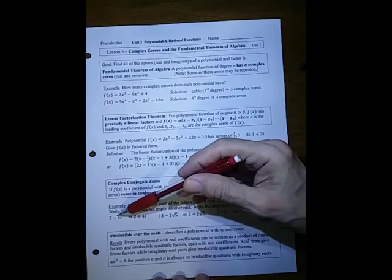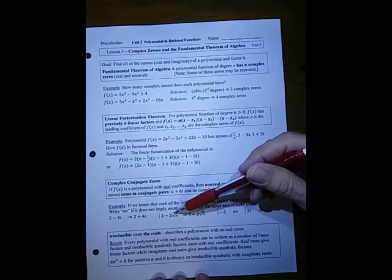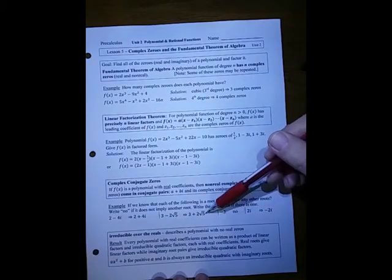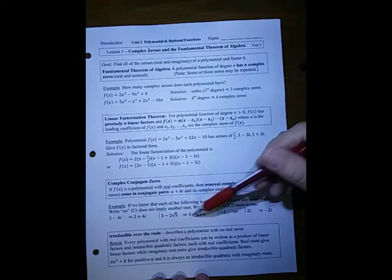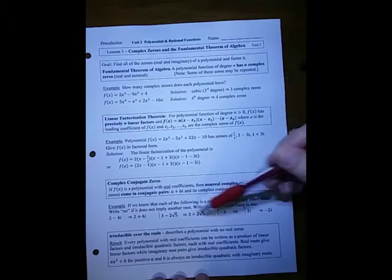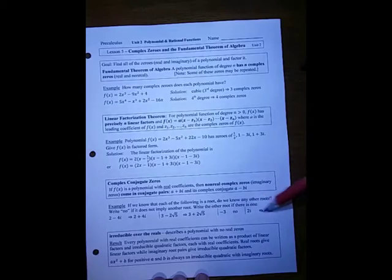So if I know 2 minus 4i is a root, 2 plus 4i has to be a root. If we know 3 minus 2 square roots of 5, then we know 3 plus 2 square roots of 5, not because that's imaginary, but because we know the irrationals also have to come in pairs. If we have minus 3, we don't know anything. We do not know that 3 has to be a root. This is not irrational. It has no imaginary part. And then 2i, we would know that. We know minus 2i. So if it's just a real part, we don't know anything, but if it has an imaginary part only, then we do know that.